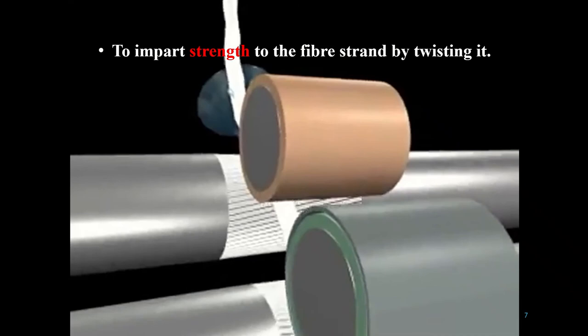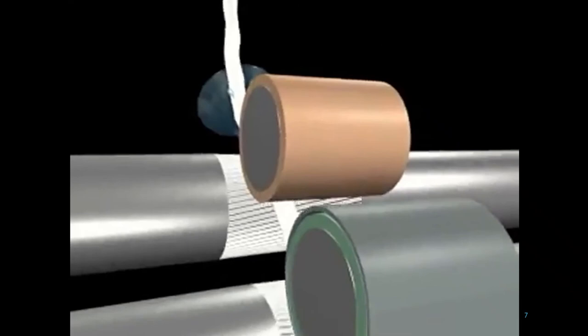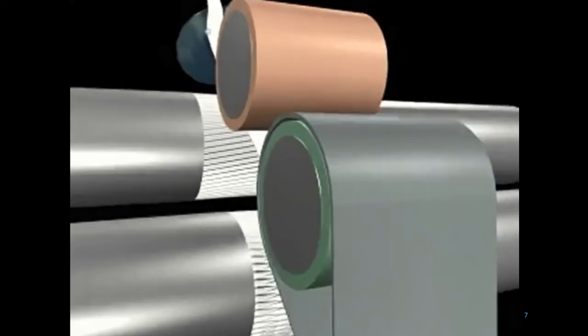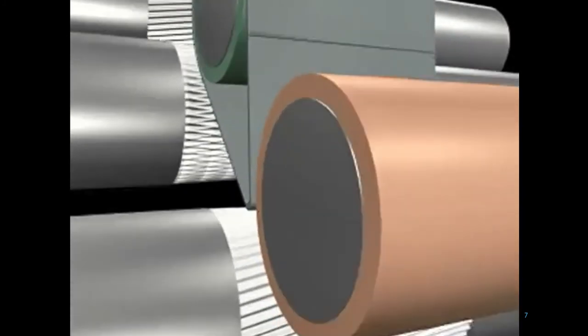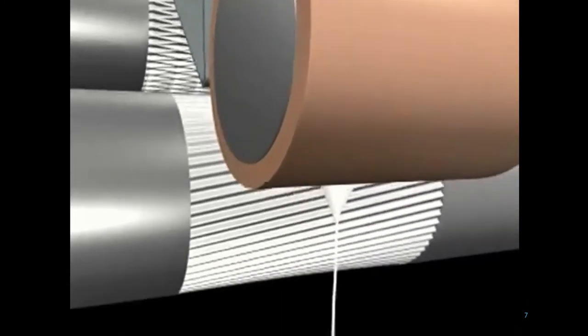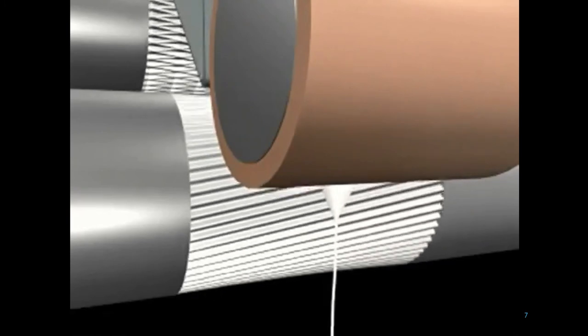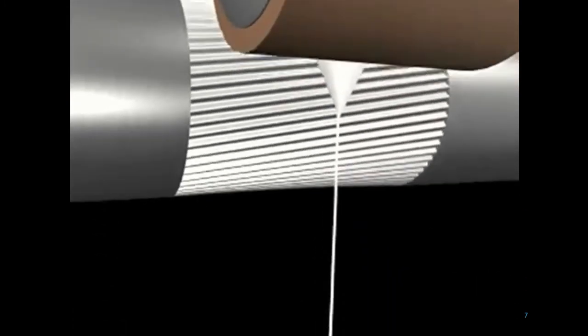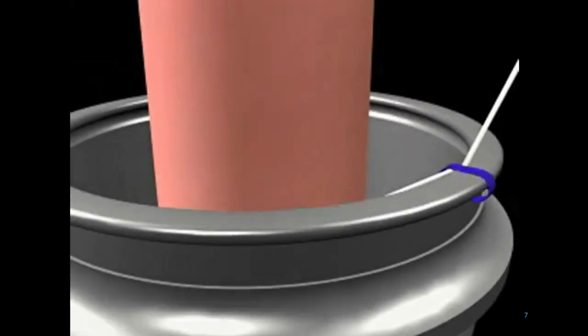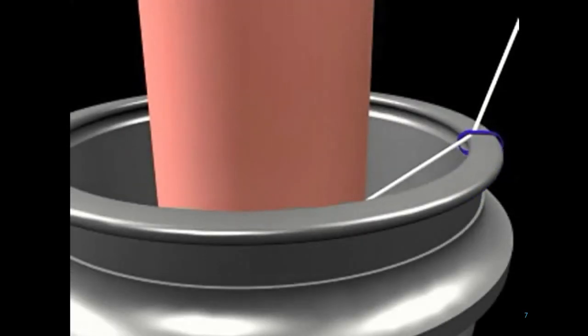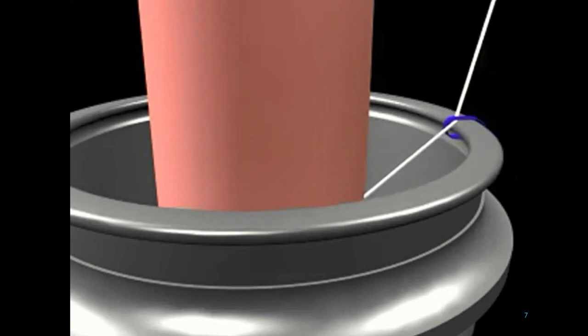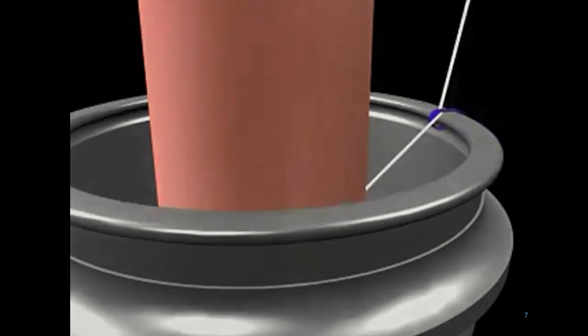The second objective is to impart strength to the fiber strand by twisting it. The drafted strand of fiber from the front drafting roller is twisted by the help of traveler rotation on the surface of the ring. Each rotation of the traveler initiates one turn of twist on the fiber. The traveler rotates by the dragging action of the spindle.